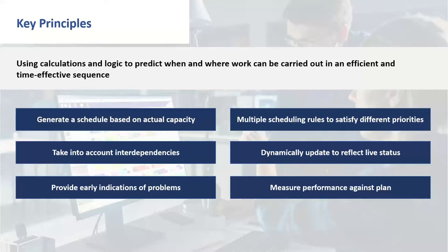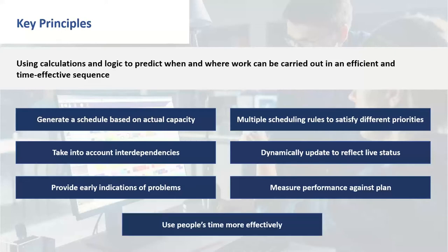Coupled with the shop floor data collection system, we can also look at performance against the plan. Two key things: standard times versus actual times — are the times in your ERP system really representative of how long things are actually taking on the shop floor? And schedule adherence — we plan all this work to be done this week, but how closely are we really adhering to that schedule? The scheduler also enables us to use people's time more effectively, saving time and freeing them for more productive tasks.